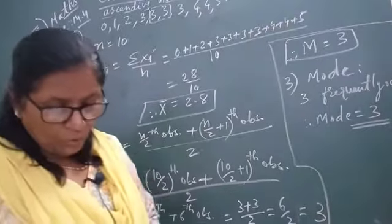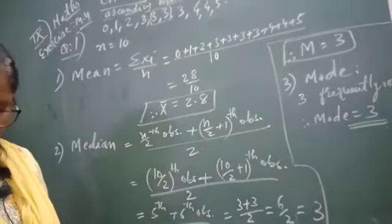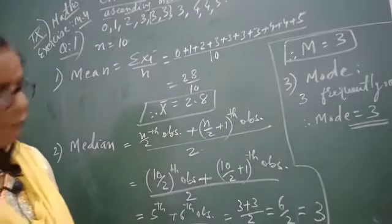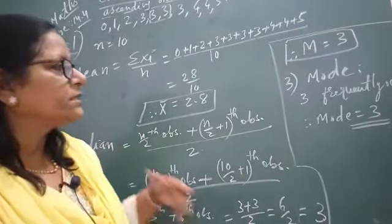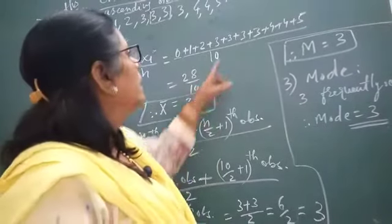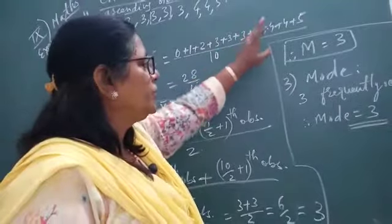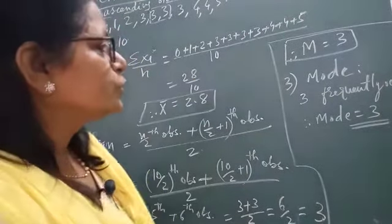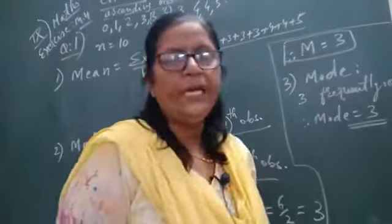You know that mode is the most frequently repeating number. So here 1, 2, 3, 4. 3 is frequently occurring for 4 times. So the mode of the data will be 3.